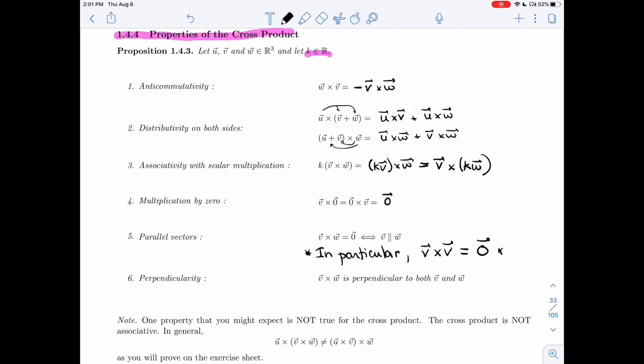We've looked at perpendicularity as well. V cross w is always perpendicular to v and always perpendicular to both. And again, let me add one way we looked at this that we'll use in a second. If you take the dot product, you'll get zero. Whether you're taking the dot product with v or with w, you will get zero.